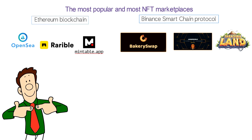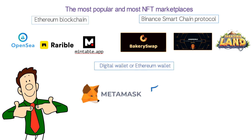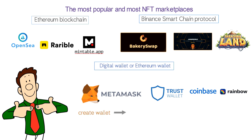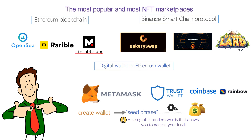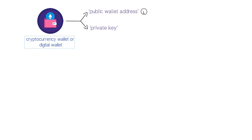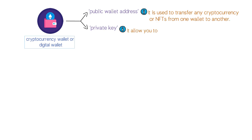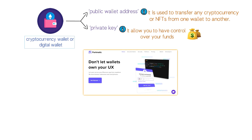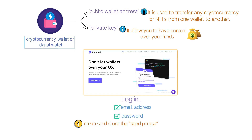After selecting the platform and before you start minting, you will need a digital wallet or Ethereum wallet. The most popular digital wallets are MetaMask, Trust Wallet, Coinbase Wallet, and Rainbow. When you create a wallet, it generates a seed phrase — a string of 12 random words that allows you to access your funds if you lose access or forget your password. A cryptocurrency wallet is composed of a public wallet address and a private key. The public address is used to transfer cryptocurrency or NFTs between wallets, while private keys allow you to control your funds. Another wallet worth mentioning is Fortmatic/Magic, which allows login with an email address and password and securely stores your seed phrase for you.